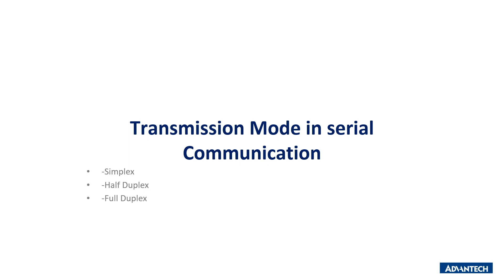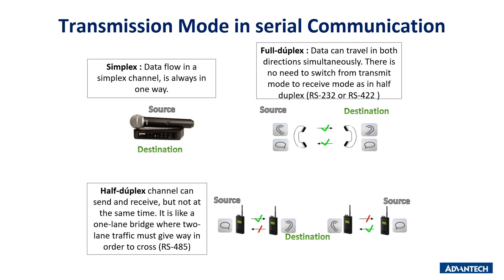There are three transmission modes in serial communication: simplex, half duplex, and full duplex. In simplex, data flows only in one direction — not often used because error signals cannot be sent back. Examples include broadcasting or radio. Half duplex can send and receive data, but not simultaneously — examples include talkback radio or RS-485. In full duplex, data travels in both directions simultaneously — examples include telephone, RS-232, or RS-422.